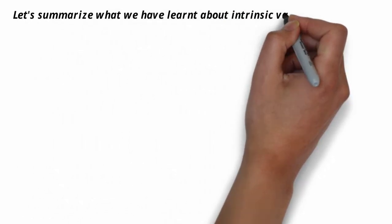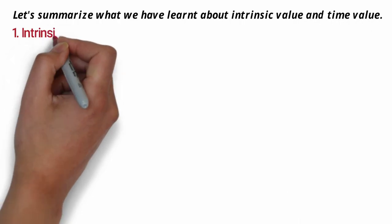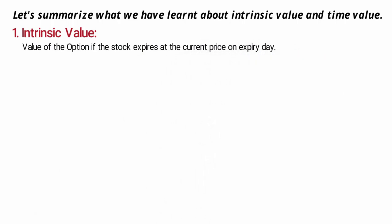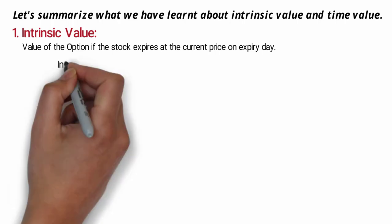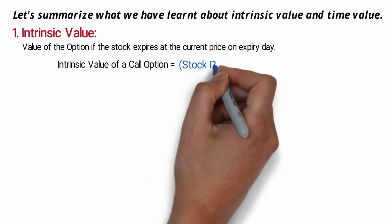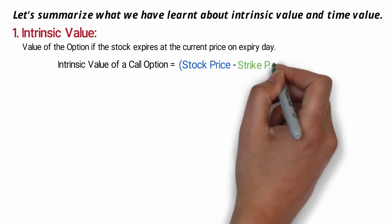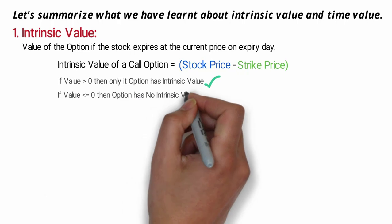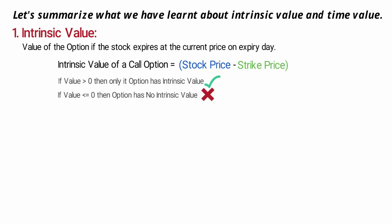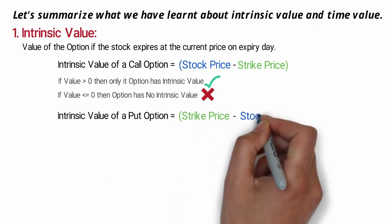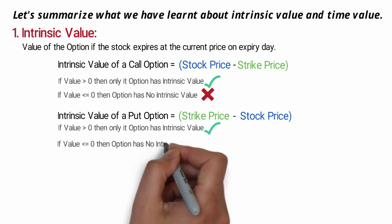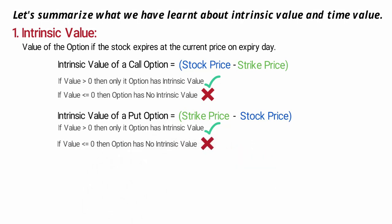Let's summarize what we have learnt about intrinsic value and time value. Number one — intrinsic value: this is the value of the option if the stock expires at the current price. We can write a formula: intrinsic value of a call option equals stock price minus strike price. If the value is greater than zero, then the option has intrinsic value. If the value is zero or negative, the call option has no intrinsic value. Intrinsic value of a put option equals strike price minus stock price. Again, if the value is greater than zero the option has intrinsic value, and if it is less than or equal to zero, the option has no intrinsic value.